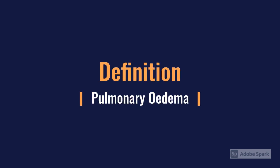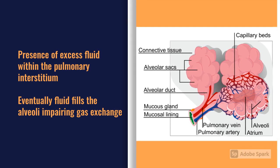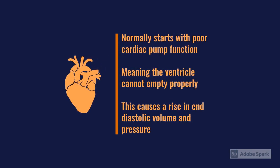Pulmonary edema by definition is the presence of excess fluid in the pulmonary interstitium and the alveoli, generally due to a cardiac cause, though there are other causes. The pathophysiology starts with poor pump function, essentially meaning the ventricle cannot empty properly. This leads mainly to a rise in the amount of blood left in the ventricle at the end, which increases the end diastolic volume and pressure.